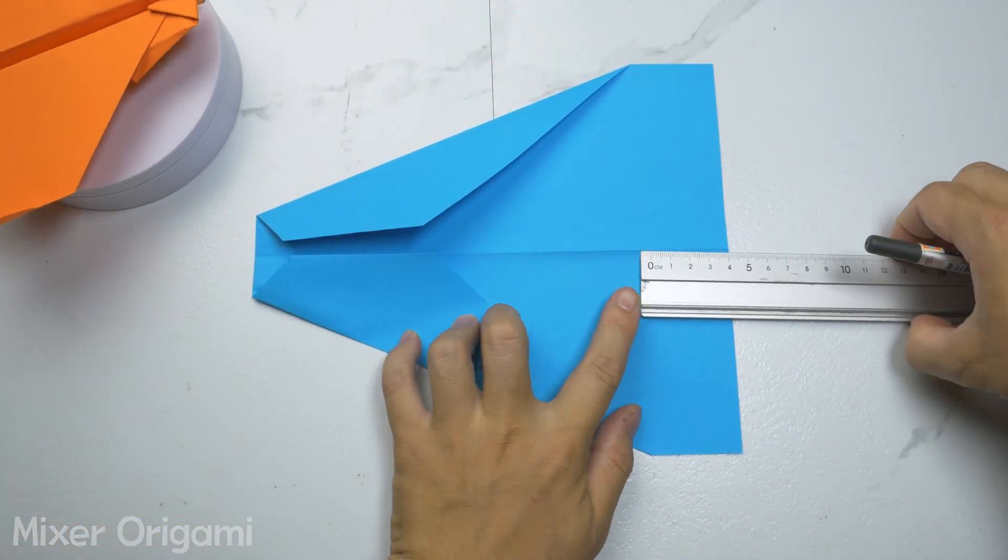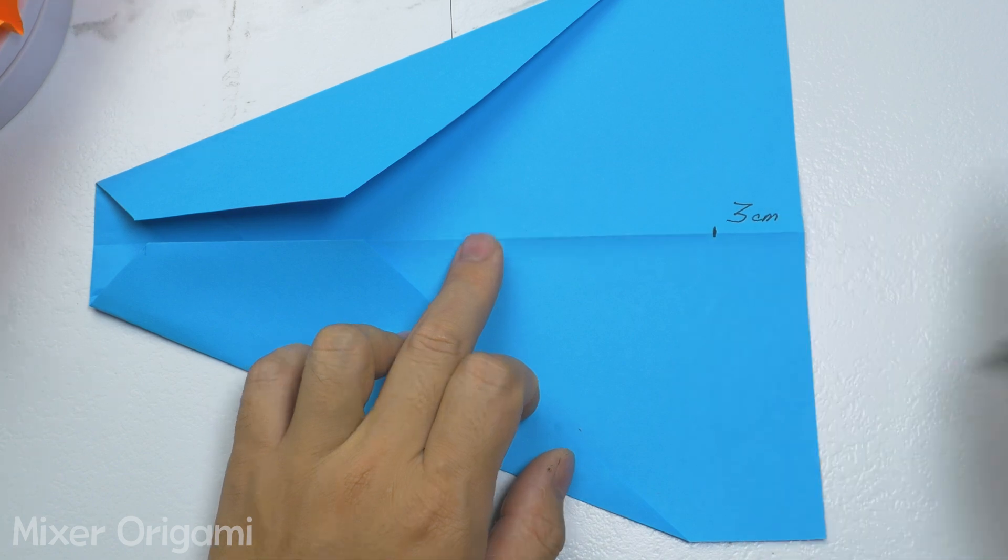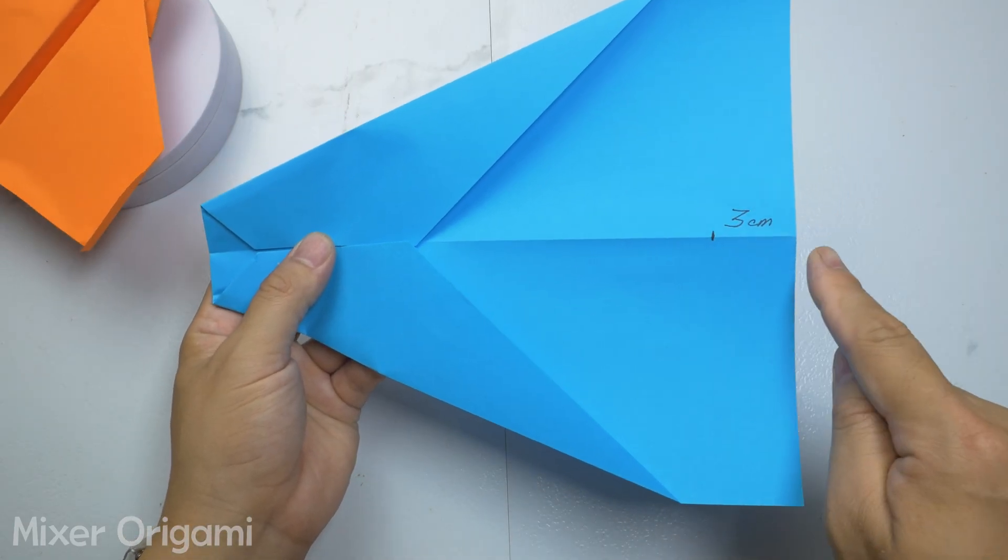Step 6. Use a ruler and mark a point three centimeters from the base. Next, fold the top of the paper airplane down below the marked point.